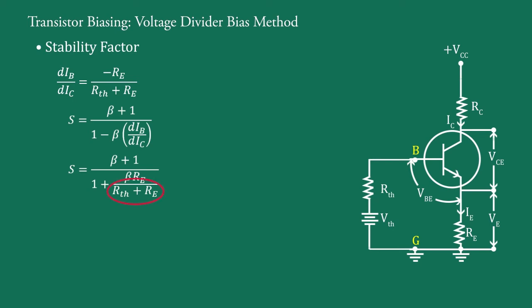Now, transfer this part into numerator. Therefore, S equal to beta plus 1 into RTH plus RE upon RTH plus RE plus beta RE. Or, S equal to beta plus 1 into RTH plus RE upon RTH plus 1 plus beta into RE.